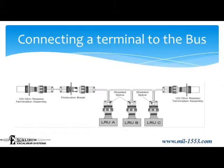A CAN bus must be terminated with 120 ohm resistors to prevent reflections back onto the bus. Twisted shielded cables should be used, and devices should be connected by splicing in the high, low, and shield signals from the bus to the device. The high and low splices should be of identical length.